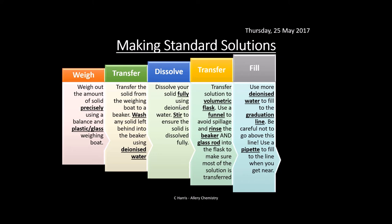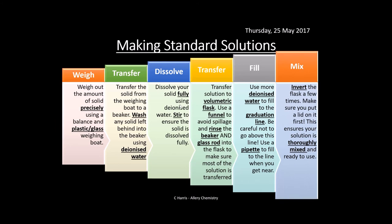Fill the volumetric flask with deionized water to the graduation mark on the neck — never go above it or you'll over-dilute. Use a pipette when approaching the mark for accuracy. Read from the bottom of the meniscus. Finally, put the lid on and invert the flask to mix thoroughly. From the known mass and volume, you can calculate the concentration of the standard solution.